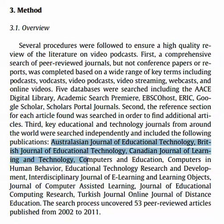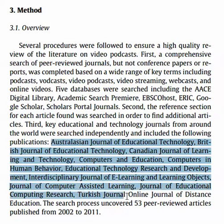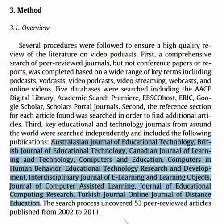So you list some of the key research journals that you've assessed. You haven't assessed maybe a lot right now, but when you've completed your review, you will be able to provide a good list. And then you summarize saying the search process uncovered this many articles published from this year to that year, so that the reader gets a good idea of the scope of your review.